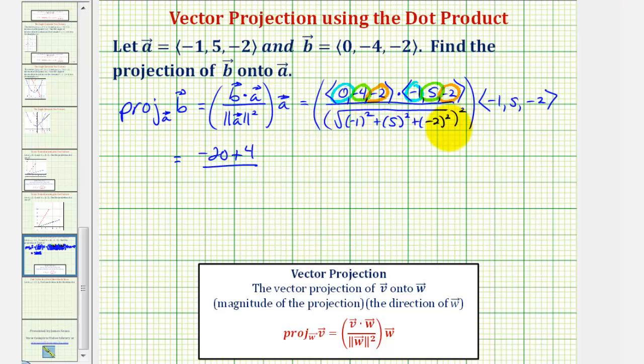Looking at the denominator we would have the square root of negative one squared, that's one, plus five squared, that's twenty-five, plus negative two squared, that's plus four. So we have the square root of thirty, but that's squared, times vector A.